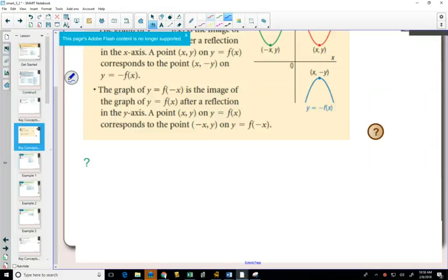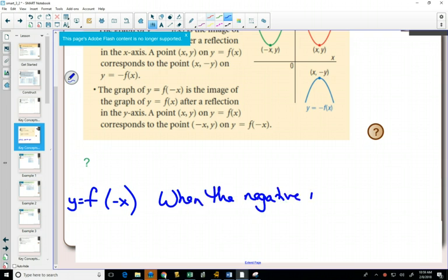And we're going to start with y equals f of negative x. So here, using the same language we did with translations, the negative is inside the function. So when the negative is inside the function with the x, everything that we had inside the function when we did translations, that moved things horizontally left and right. The same thing happens with reflections.